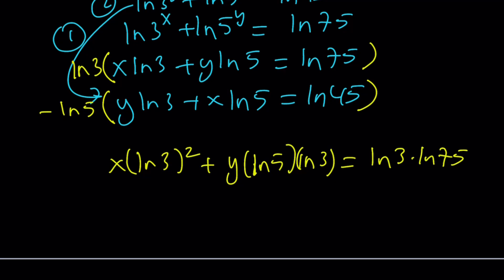And then here we get negative y ln 5 times ln 3 minus x times ln 5 squared equals negative ln 5 times ln 45. Awesome.